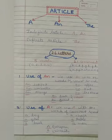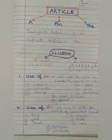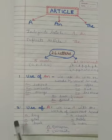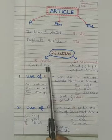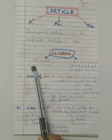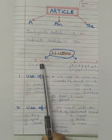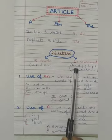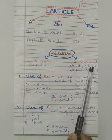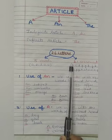There are 26 letters in English alphabets. A, E, I, O, U — these are the vowels. There are 5 vowels and the rest are 21 consonants.